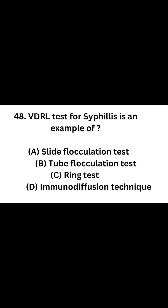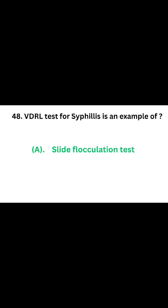Question number 48. VDRL test for syphilis is an example of: Option A: Slide flocculation test. Option B: Tube flocculation test. Option C: Ring test. Option D: Immunodiffusion technique. The correct answer is Option A, Slide flocculation test. VDRL test for syphilis is an example of a slide flocculation test.